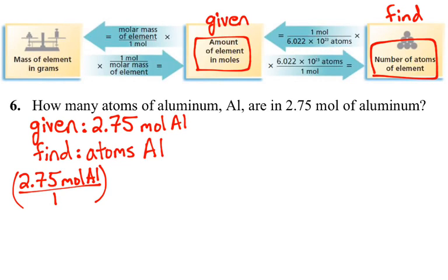And if we take a look at our pathway up top, if we take our given number of moles of an element, and we multiply that times 6.022 times 10 to the 23rd atoms of that element over moles of that element, that will lead us into finding the numbers of atoms of that element.